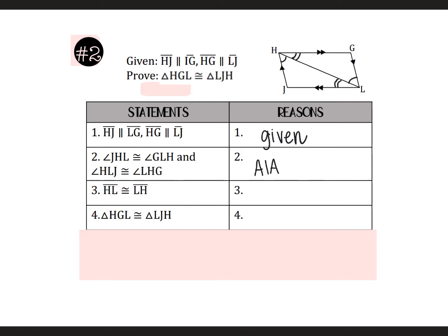The next thing they have is HL is congruent to LH. That's because the two triangles share that side, so that would be reflexive. And then finally, the two triangles are congruent because of angle, side, angle.